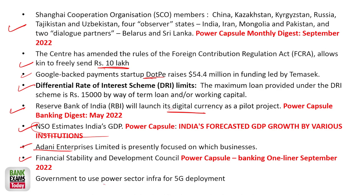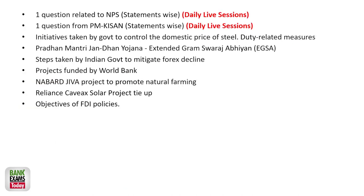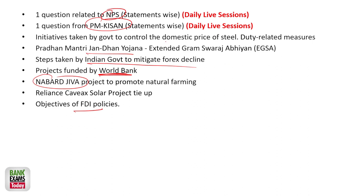Government to use power sector infrastructure for 5G deployment — 5G was popular last year, and that is why it appeared in the exam. Government schemes like NPS, PM Kisan, and Jan Dhan Yojana were in the exam. FDI policies, Reliance Caviex project, projects funded by the World Bank, and steps taken by the Indian government to mitigate forex decline — these are the kinds of topics asked in last year's exam.